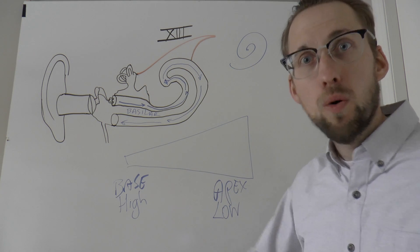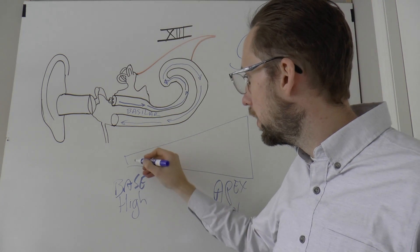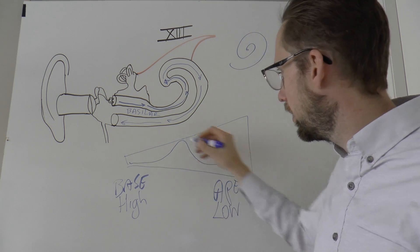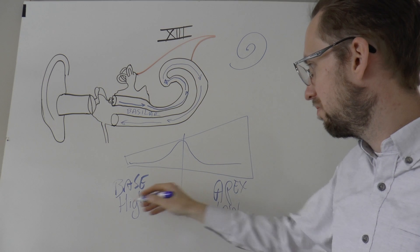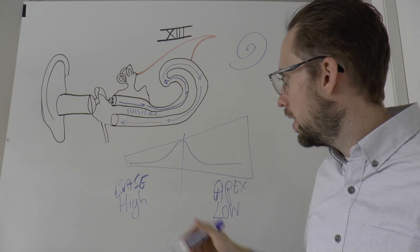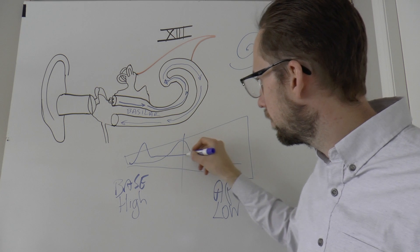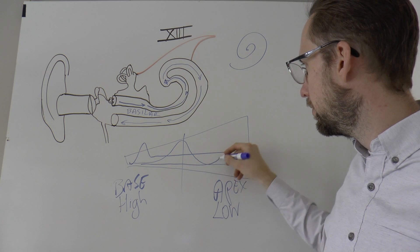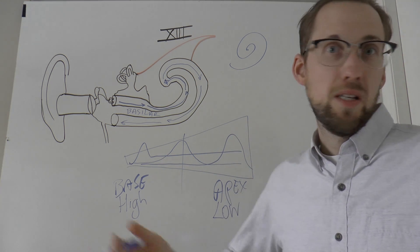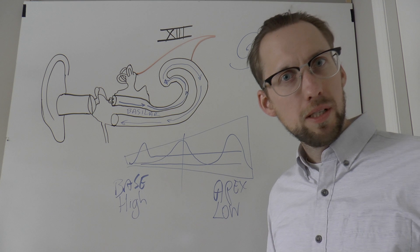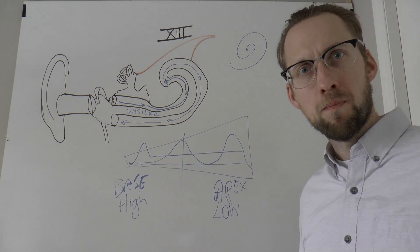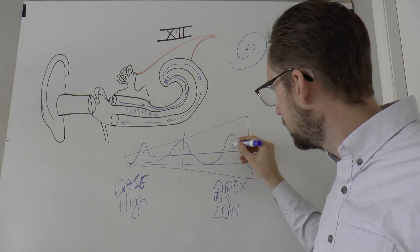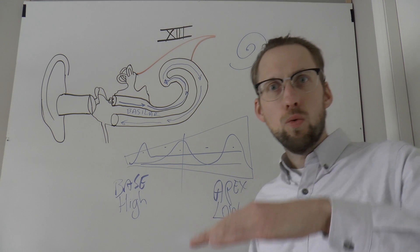If a wave running across the basilar membrane peaks in the middle, the brain says that's a medium tone. If it peaks near the base, the brain says that's a high tone. If it peaks near the apex, the brain says that's a low tone. Of course, it could peak anywhere in between. That's place coding: you just look at where on the basilar membrane the wave peaks.